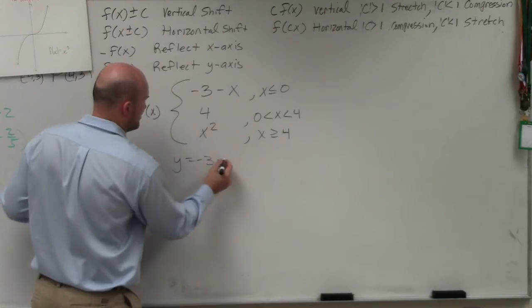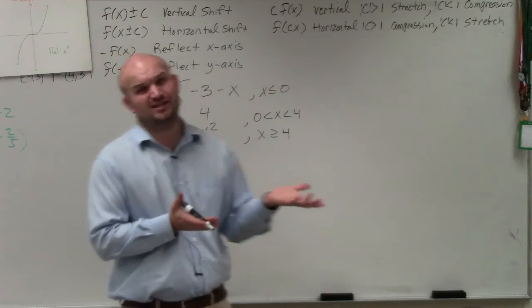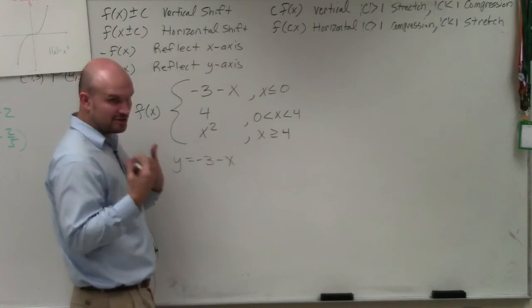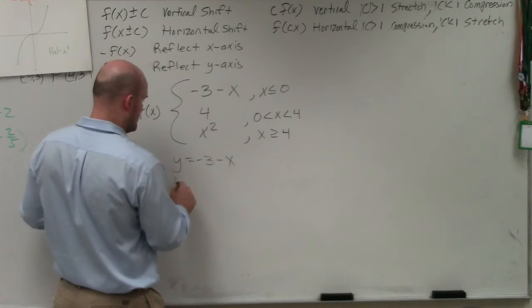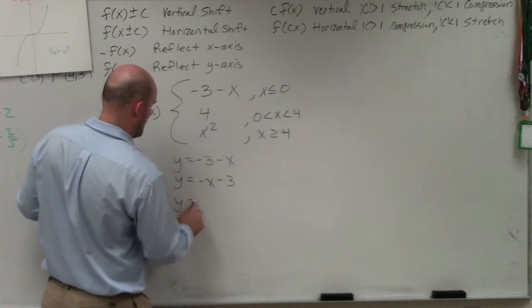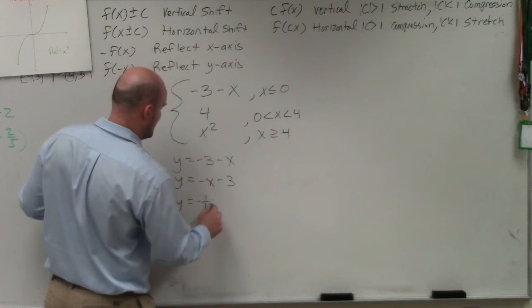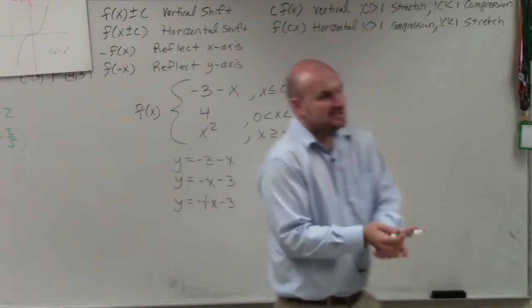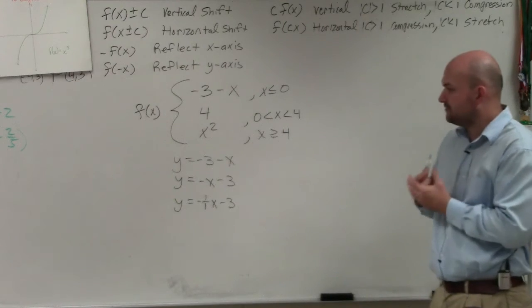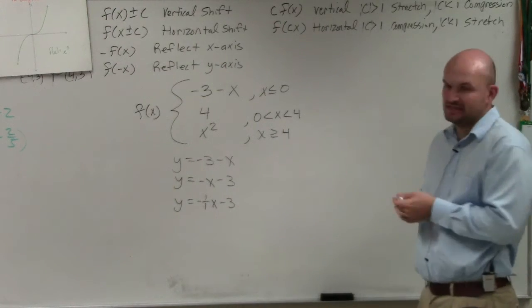So what you can do is think about them as, let's write this as y equals negative 3 minus x. Can you graph that? If you're still having trouble, think about that in terms of y equals mx plus b. Rewrite it so it's negative x minus 3, and y equals negative 1 over 1x minus 3. Now that's in mx plus b form. You can see that m is negative 1. Now that's a little bit easier to graph.